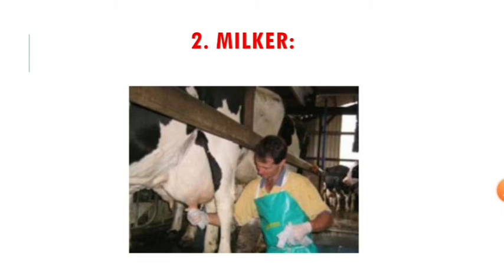The second point is the milker or dairyman. The dairyman handles the cow during milking, so the dairyman should be clean in nature. While removing the milk, the milker's hands are in close contact with the cow, so the hands should be cleaned. If hands are contaminated or carry microorganisms, those microorganisms will enter the udder and indirectly contaminate the milk.